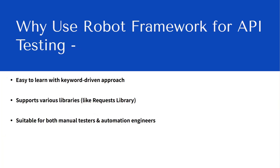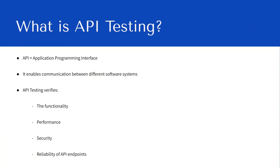Why use Robot Framework for API testing? Because it uses a keyword-driven approach that's easy to learn, and it supports various libraries like the RequestsLibrary. It supports both manual testers and automation engineers. API testing verifies the functionality, performance, security, and reliability of API endpoints — endpoints being where you send a request and where you fetch the response. In API testing you send a request and get a response, and your data is more secure with very little chance of being hacked or corrupted.